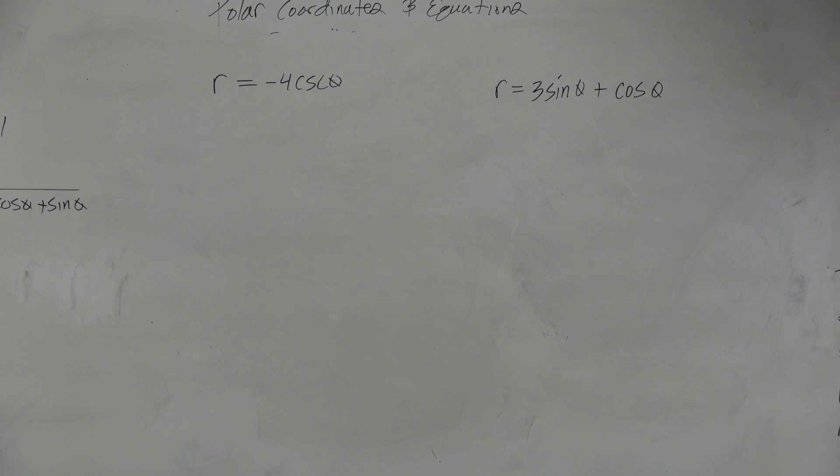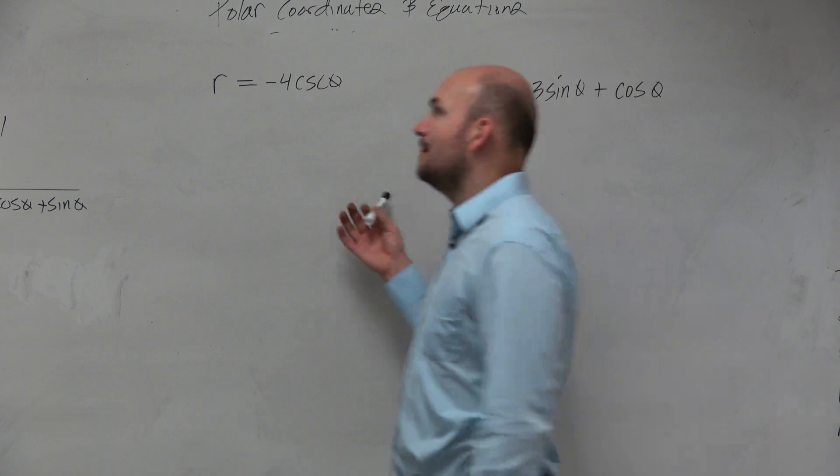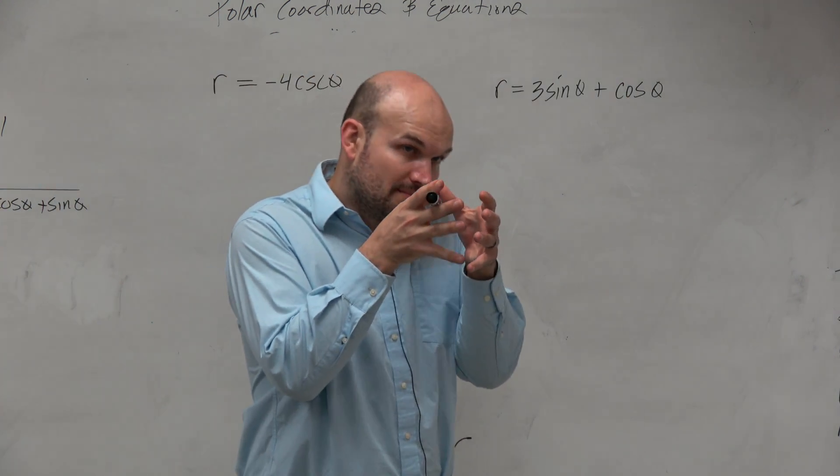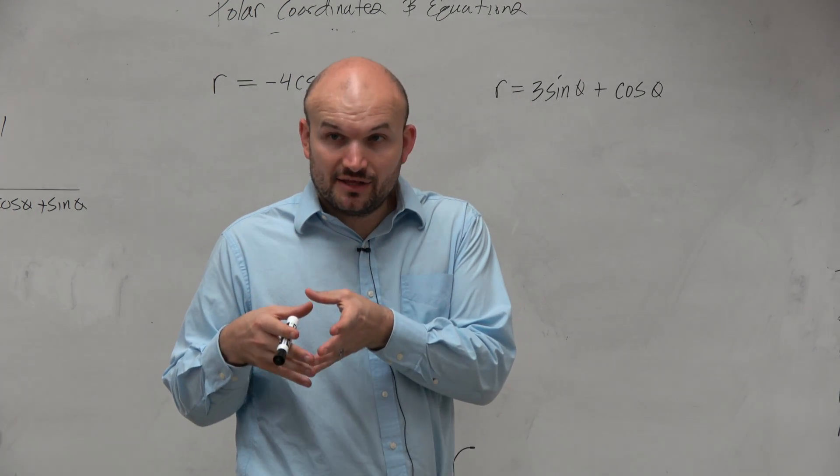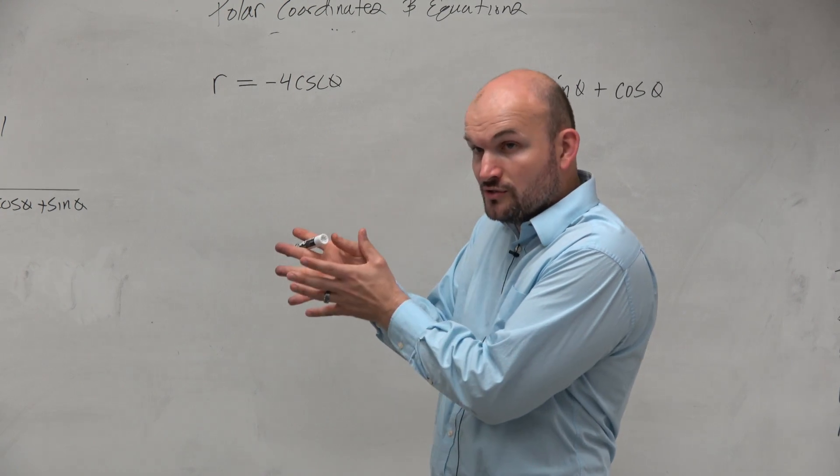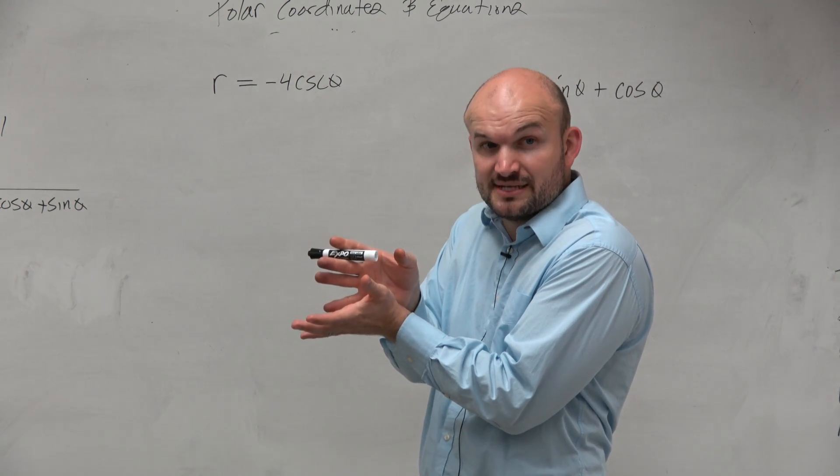So in this equation, if we want to go from polar to rectangular, the only way we can do that is if we find r cosine theta - we can plug it in and replace it with x.